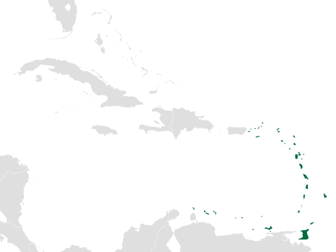Windward Islands: Dominica, Martinique, St. Lucia, Barbados — a continental island found 100 miles east of the Windward chain — St. Vincent and the Grenadines, Carriacou and Petit Martinique, Grenada, Tobago, and Trinidad. They are the most southern islands of the Caribbean region.